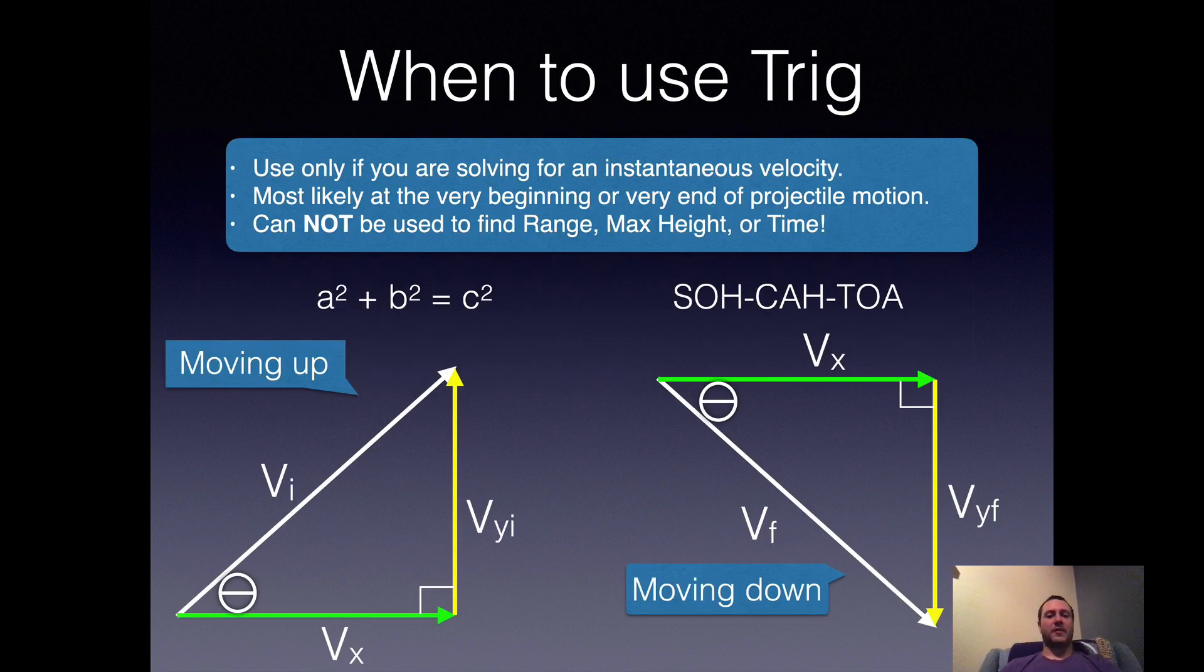When we use trig, on the left-hand side we see a diagram of an object that is moving up, and on the right-hand side we see a diagram of an object that is moving downward. When you see VI and VF, the white vectors respectively, note that there is no direction associated with it because that is the resultant vector of Vx and Vy. That means it is moving both vertically and horizontally, as you can very clearly see from the diagram. Note in both diagrams, the angle theta is being measured from horizontal. We could certainly measure angles from vertical, but more often than not we're going to measure angles from horizontal.